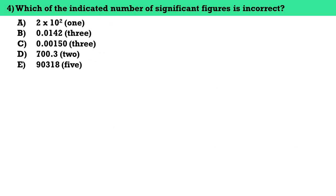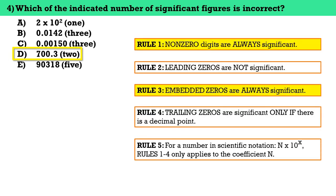Number four, which of the indicated number of significant figures is incorrect? The answer here is letter D. The correct number of significant figures in 700.3 should be indicated as 4. According to rule number one, the digits 7 and 3 are significant because these are non-zero digits. The two zeros between 7 and 3 are also significant because, according to rule number three, embedded zeros are always significant.